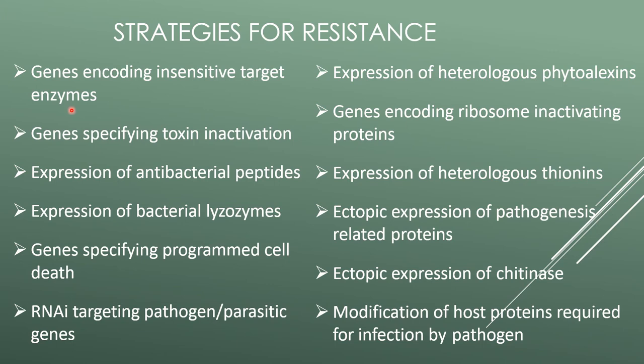Strategies for resistance include: genes encoding insensitive target enzymes, genes specifying toxin inactivation, expression of antibacterial peptides, expression of bacterial lysozymes, genes specifying programmed cell death, RNAi targeting pathogen parasitic genes, expression of heterologous phytoalexin genes, genes encoding ribozyme inactivation proteins, expression of heterologous thionins, ectopic expression of pathogen-related proteins, ectopic expression of chitinase, and modification of host proteins required for infection by pathogens.